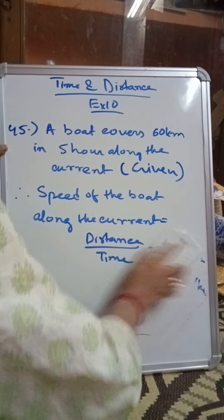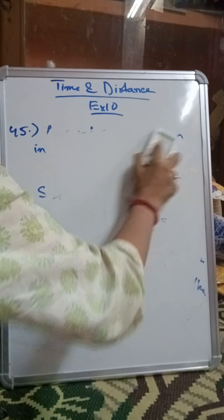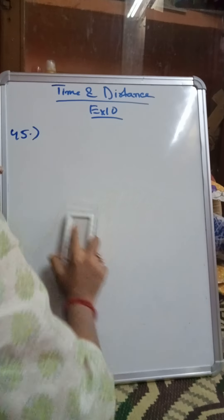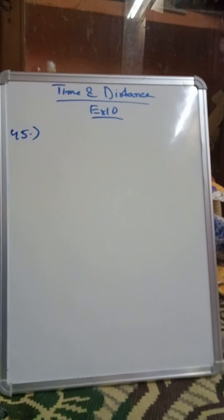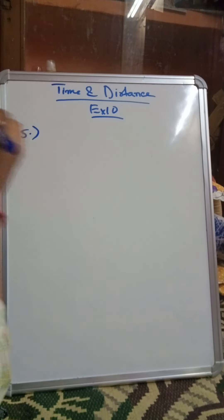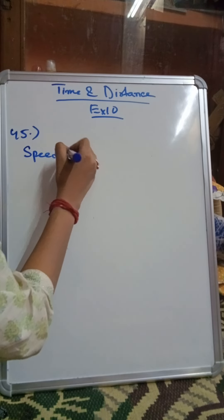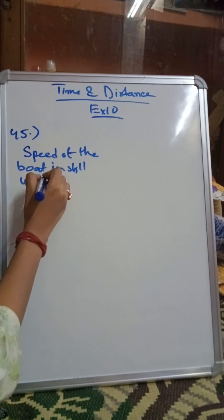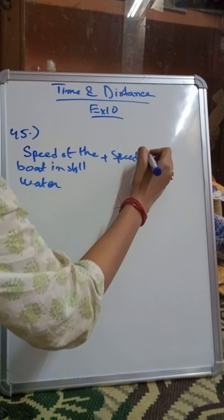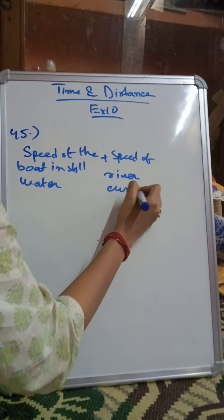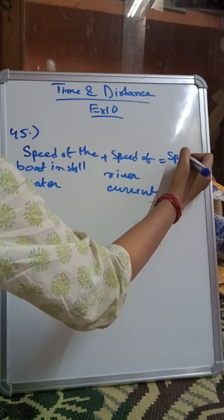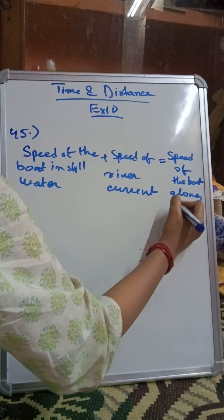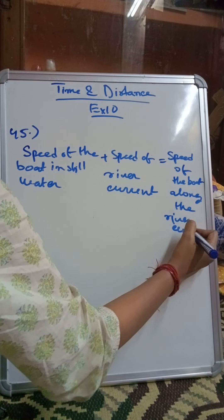Now we have to find the speed of the river current. This boat is flowing along the current, meaning it is moving in the same direction as the river, so it faces no opposition. Therefore, the formula is: speed of the boat in still water plus speed of the river current equals the speed of the boat along the current.